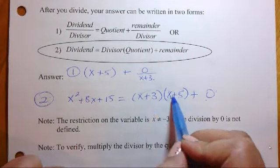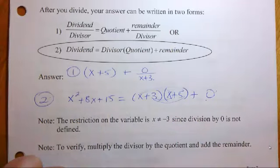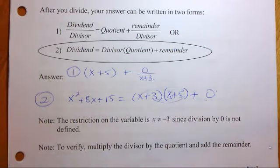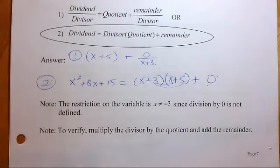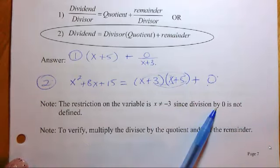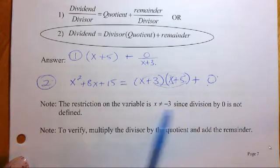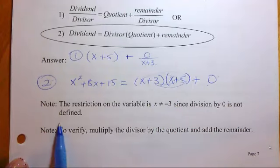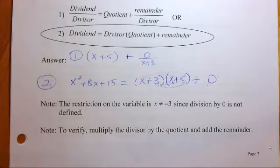And you can quickly see that if you multiply this out, you're going to end up with the answer again. So here, we've just restated that the restriction on the variable is x cannot equal to negative 3, since division by 0 is not defined. And to verify, just multiply it through and add the remainder.